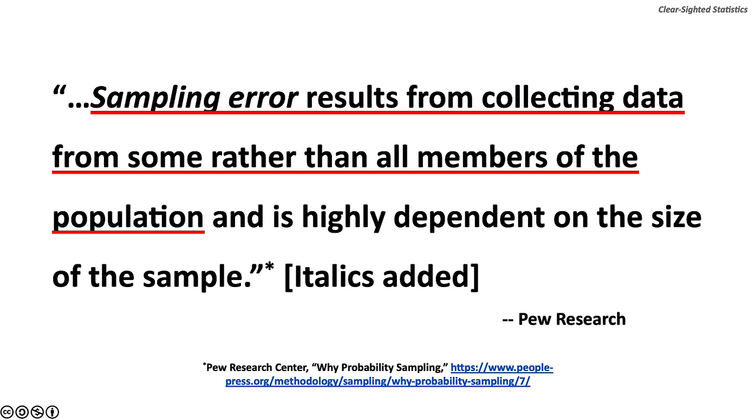Pew Research has a very clear definition of sampling error. Sampling error results from collecting data from some rather than all members of a population, and is highly dependent on the size of the sample.